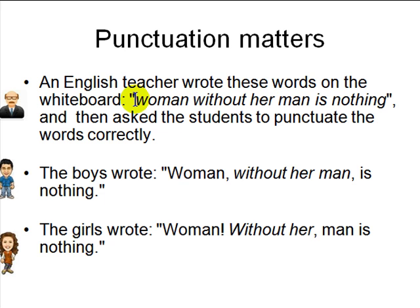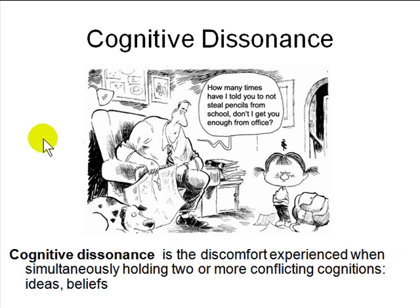Punctuation matters. An English teacher once wrote on the whiteboard: 'Woman without a man is nothing,' then asked students to punctuate it. The boys wrote: 'Woman, without her man, is nothing.' The girls wrote: 'Woman! Without her, man is nothing.' Just by placing a comma differently, you can completely negate the meaning of a sentence. Another issue is cognitive dissonance — illustrated by a father telling his kid not to steal pencils from school while he himself steals from the office. His words don't match his actions.